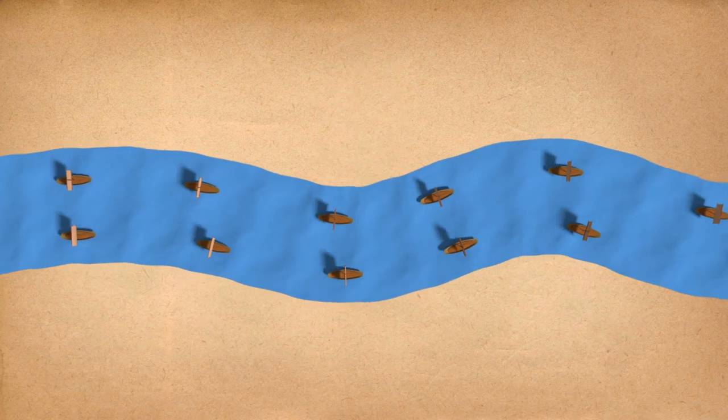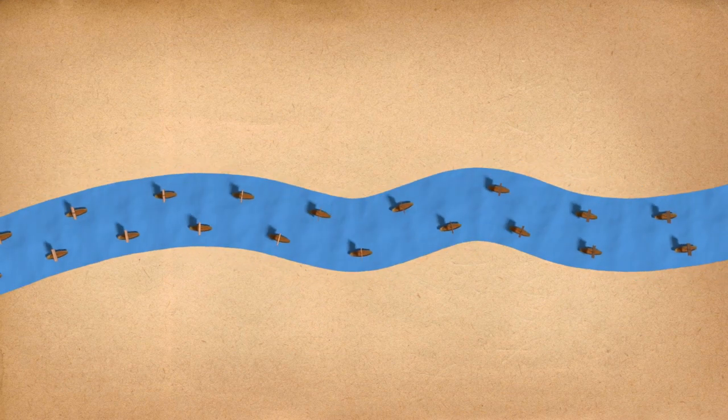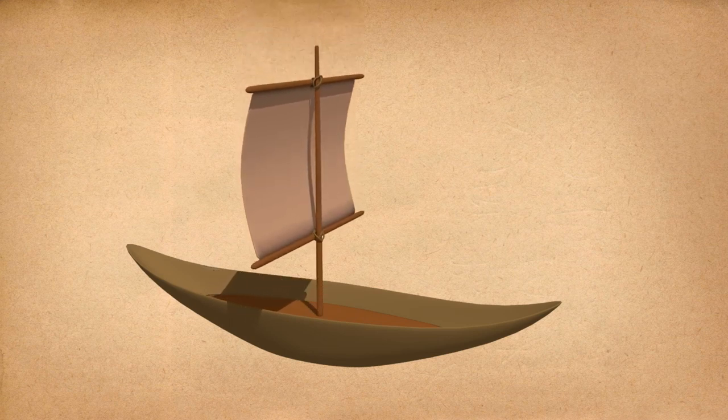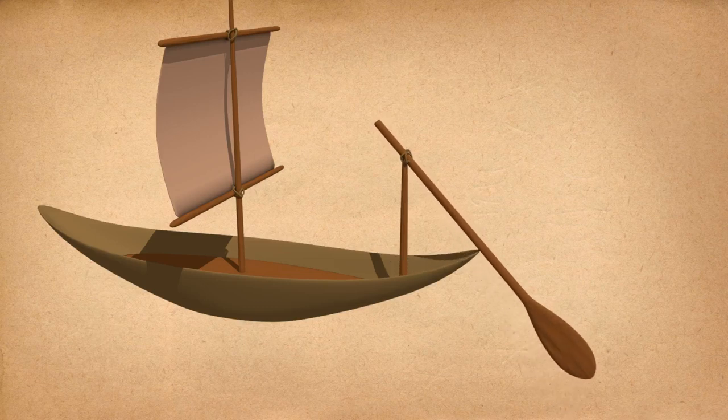Regular sailboats used for transporting or fishing were running around the Nile. They were provided with a single sail and a large oar on the stern, used for controlling the boat.